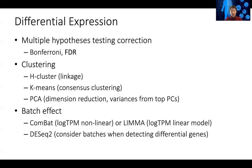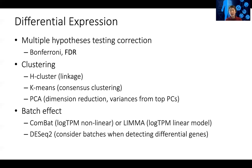The Benjamini-Hochberg approach corrects for multiple hypothesis testing by looking at the distribution of all tests. By chance, p-values should follow a uniform distribution, so that baseline can be estimated. If more genes give smaller p-values than expected by a uniform distribution, we can estimate roughly what percentage of calls are made by chance versus how many are likely real — this gives us a false discovery rate estimate.